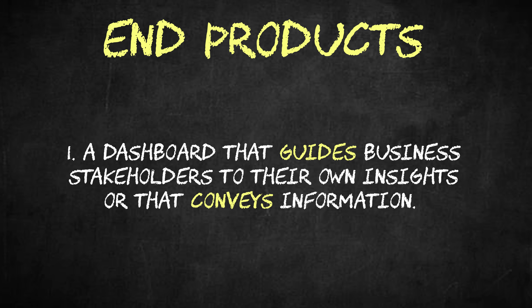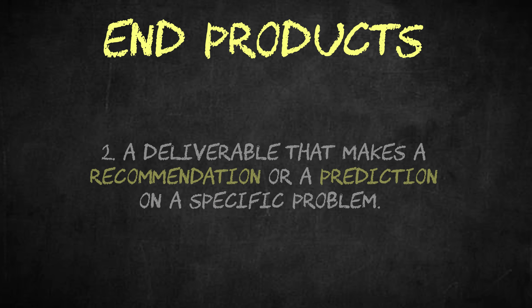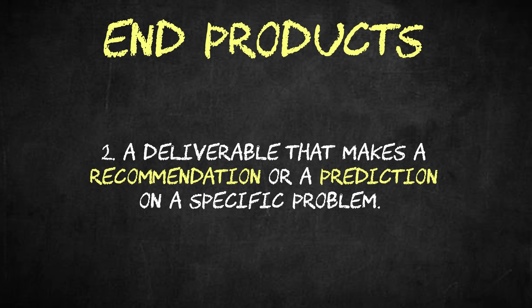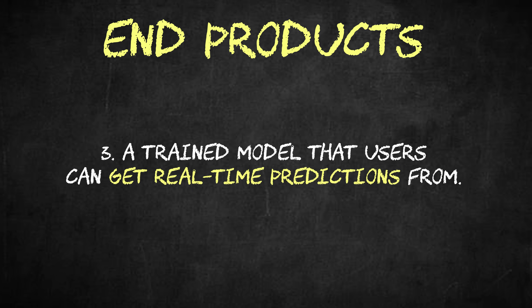We build these cool models, but what does the real end product of a data scientist's work look like? This varies pretty greatly by role. Data science deliverables generally come in three flavors: first, a dashboard that guides business stakeholders to their own insights or conveys information; second, a deliverable that makes a recommendation or prediction on a specific problem; and finally, a trained model that users can get real-time predictions from. It's really important to understand that within this domain, there aren't really ever clear right and wrong answers — just shades of certainty and uncertainty. Models need to be consistently maintained, retrained, and updated with new data so that they're as accurate as possible. One of the most popular sayings in data science is that all models are wrong, but some are useful.